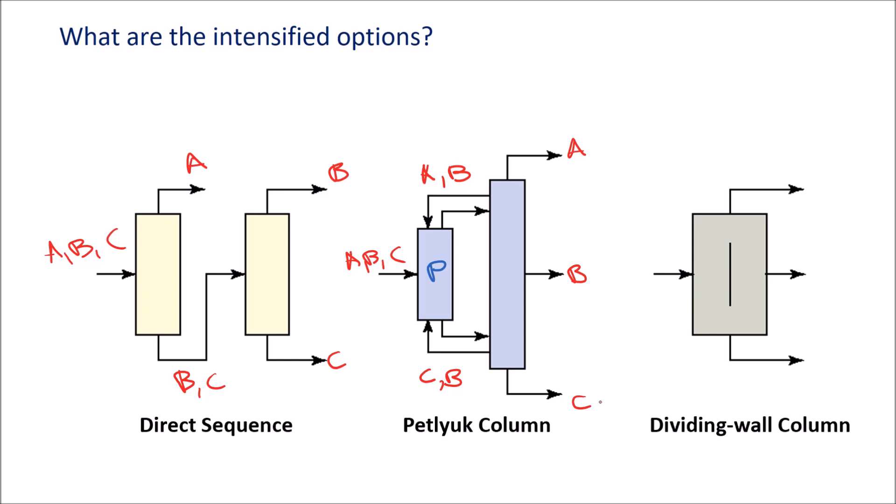And now finally getting to the dividing wall column, this is essentially a way of putting this Petlyuk column into one vessel. So we have A, B, C again, A, B, and C coming out. The pre-fractionator, which was a separate vessel, is now inside the column. And the only thing that was done to accomplish this is to add this dividing wall into the column internals here, which is separating the feed side from the product side. So quite a clever way to get the same function in a simpler piece of equipment and combine different vessels and different functions into one.